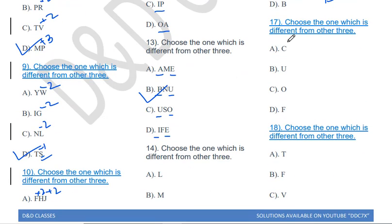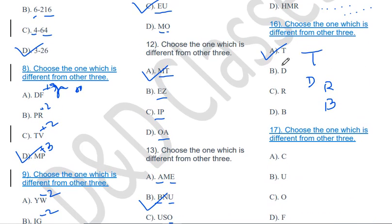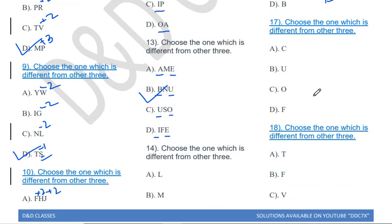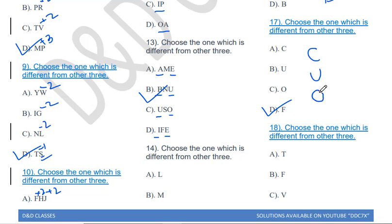Choose the one which is different from the other three: C, U, O, F. Here F is the odd one out. C, U, and O are all formed by curved lines. But F is formed entirely by straight lines. So F is the odd one out.